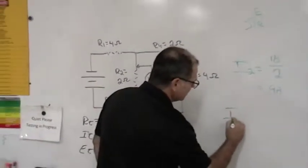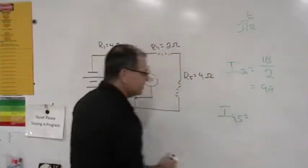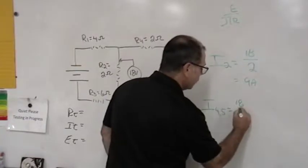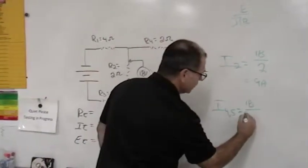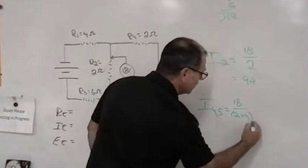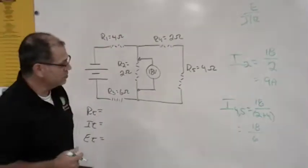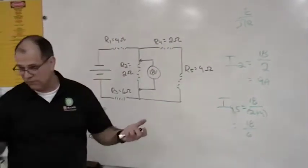So in this case, I'm going to do this. I'm going to say the current through 4 and 5 is equal to the voltage of 18 volts divided by the 2 plus 4. So 2 plus 4 gives us 6 ohms of resistance with 18 volts across it.